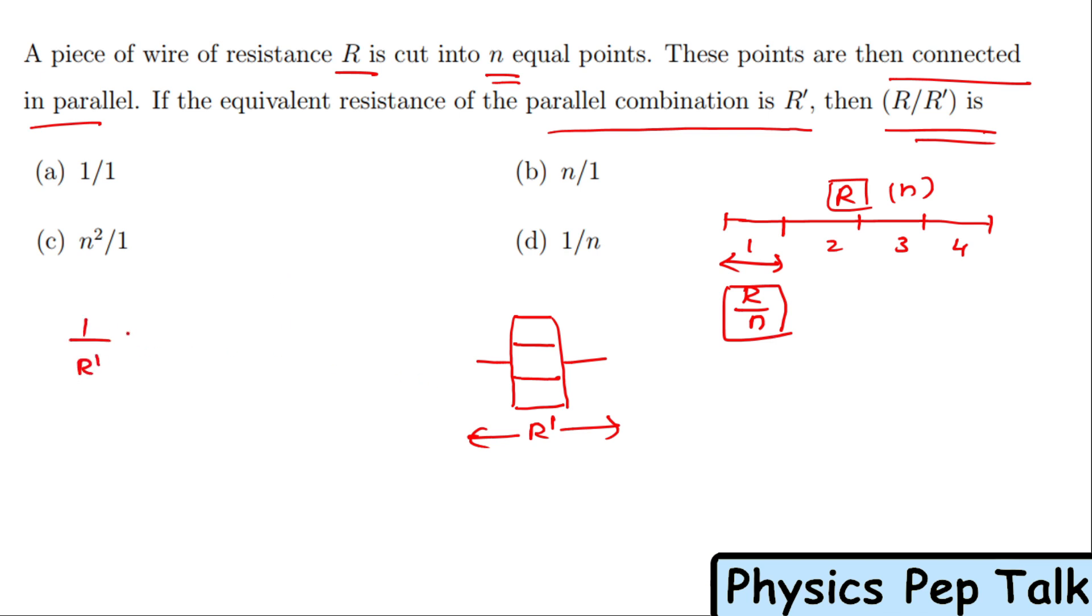What is 1/R'? It's 1/R₁ + 1/R₂ + ... + 1/Rₙ. There are n resistors. All R values are the same, equal to R/n. So this is 1/(R/n) + 1/(R/n) and so forth. Taking LCM, which is R/n, the numerator becomes n times, so there are n terms in the numerator.